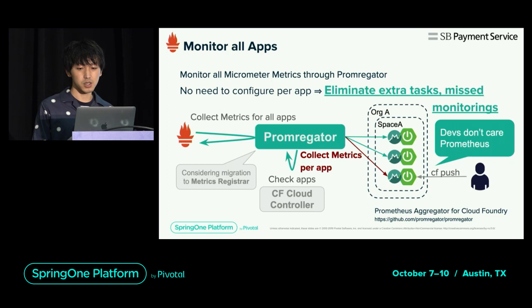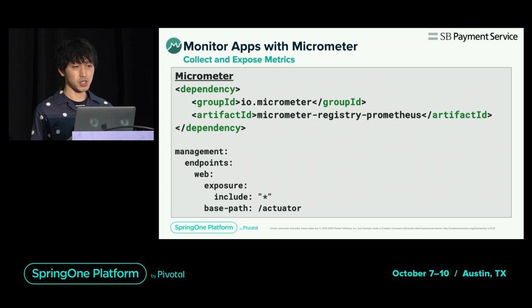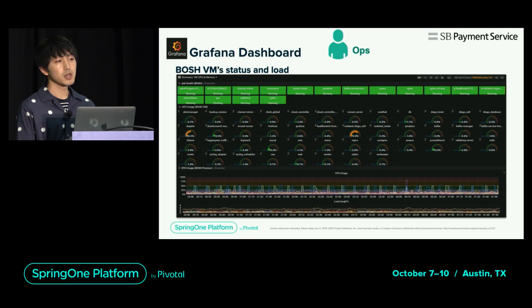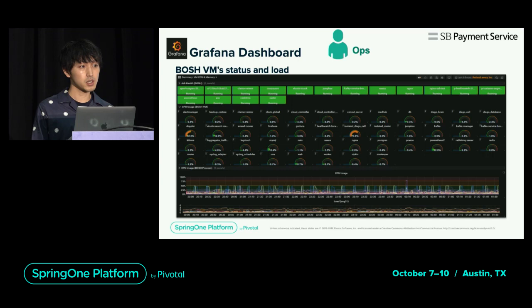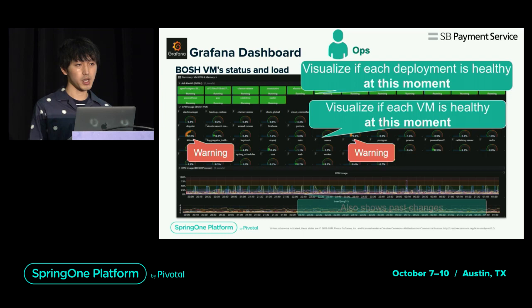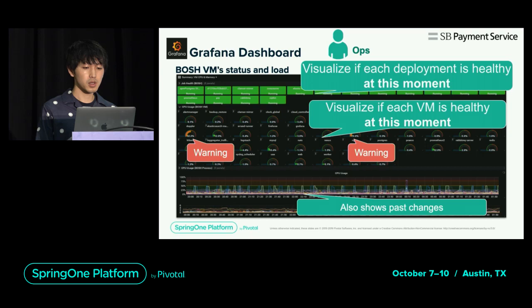App metrics are collected by using Micrometer. The introduction of Micrometer is very easy — in the case of Prometheus, app metrics can be collected with just a few settings. Here are some dashboards we are using. From the platform perspective, the status of VMs operating with BOSH is shown. We created a dashboard so that we could understand the situation at a glance. By simply displaying information this way, you can intuitively know whether it is normal or not, and the time series graph is also displayed on the same screen so that past changes can be grasped.